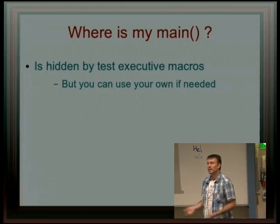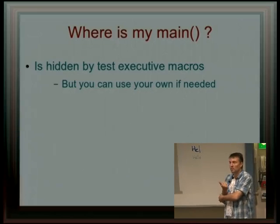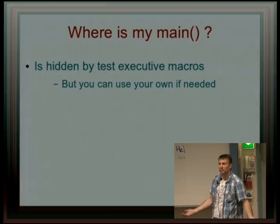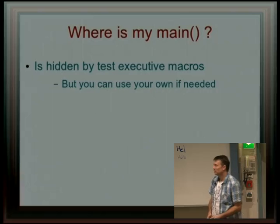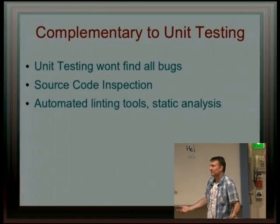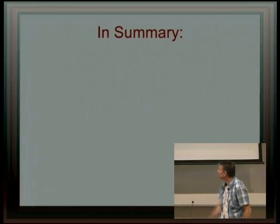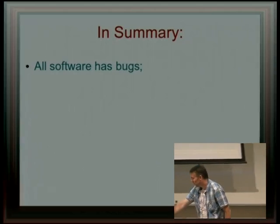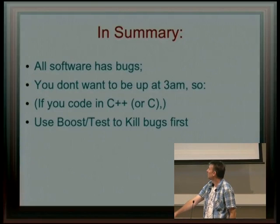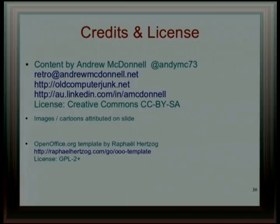Where was your main? It's hidden under the Boost macros. You can use your own main if you need to, so it's flexible. My test will usually be a CPP file structured like the example I showed, with a bunch of test cases. You may want to put one test case per CPP file or a suite or a group — whatever is best suited for your particular project. Of course, unit testing won't find all your bugs, so I still use source code inspection for selected code and automatic tools, but unit testing will often find stuff that people miss. In summary, all software has bugs. If you're doing C coding, fix your bugs with unit testing and avoid sleepless nights — Boost is easy to use.